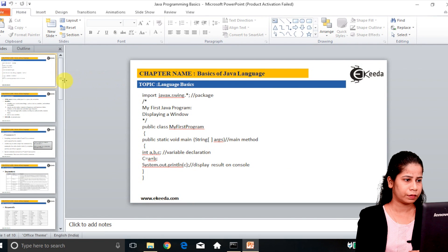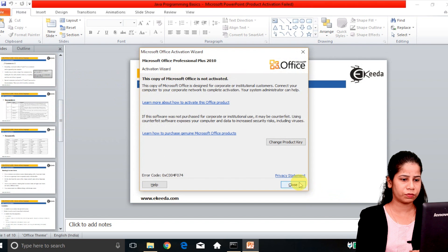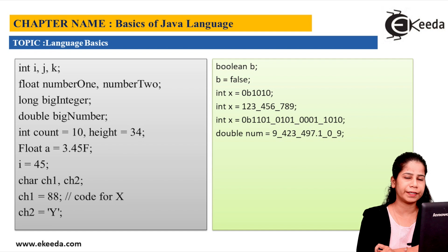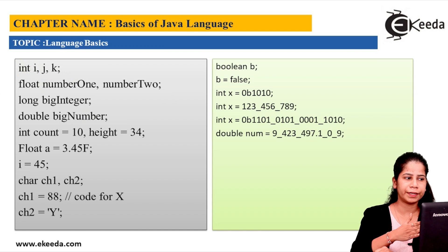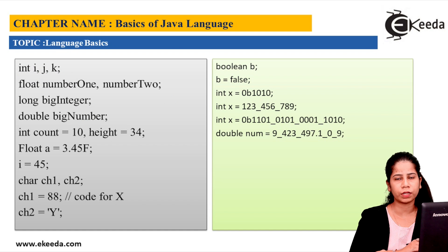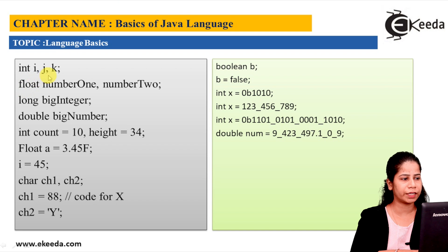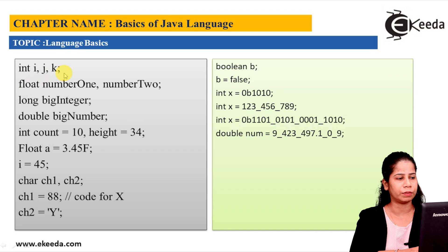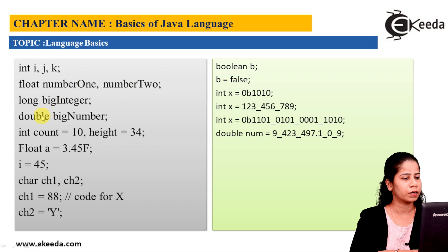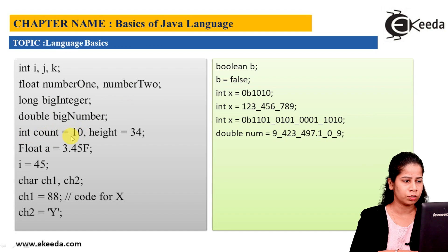Let's look at some examples of data types and variables. The syntax is: data type, then identifier. Using a comma separator we can declare multiple variables — for example: int i, j, k. Each Java statement ends with a semicolon. We also have floating point type variables like number1 and number2, long bigInteger, and double bigNumber.